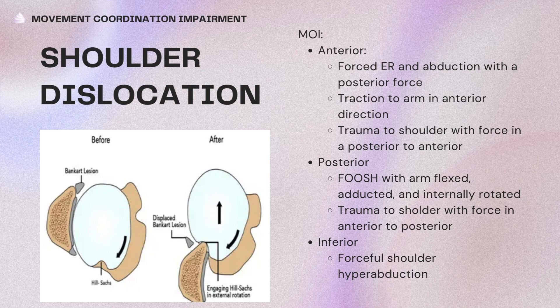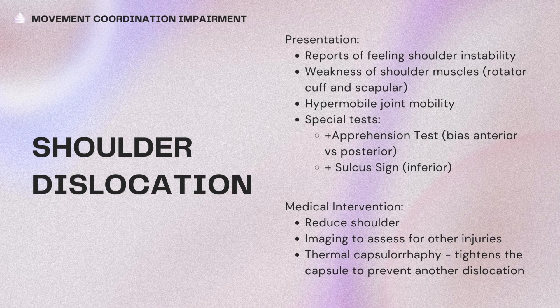Inferior dislocation is typically due to forceful shoulder hyperabduction. Presentation of shoulder dislocation or instability includes reports of feeling shoulder instability, weakness of shoulder muscles, and hypermobile joint mobility. Special tests include a positive apprehension test, biased in anterior and posterior directions, and positive sulcus sign for inferior instability. Medical intervention is to reduce the shoulder and perform imaging to assess for other injuries; alternatively, a thermal capsulorrhaphy can tighten the capsule to prevent recurrence.